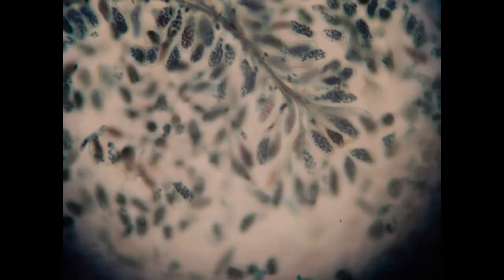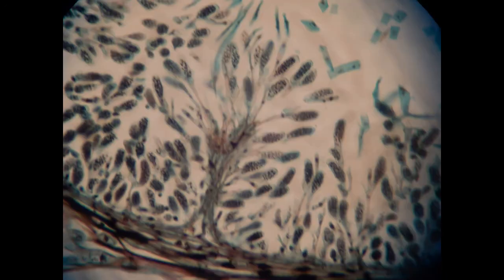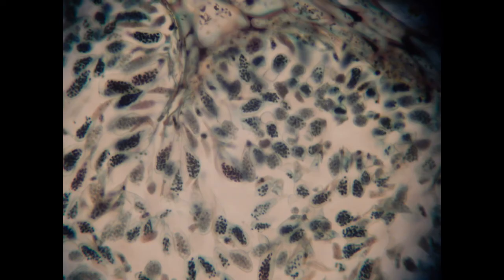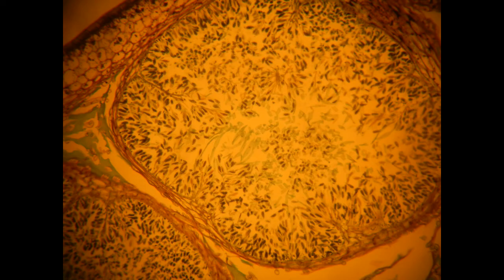These are referred to as antheridia in the male portions and oogonia in female portions. A thallus can be monoecious, producing only one type of haploid cell, or dioecious, producing both sperm and ova.